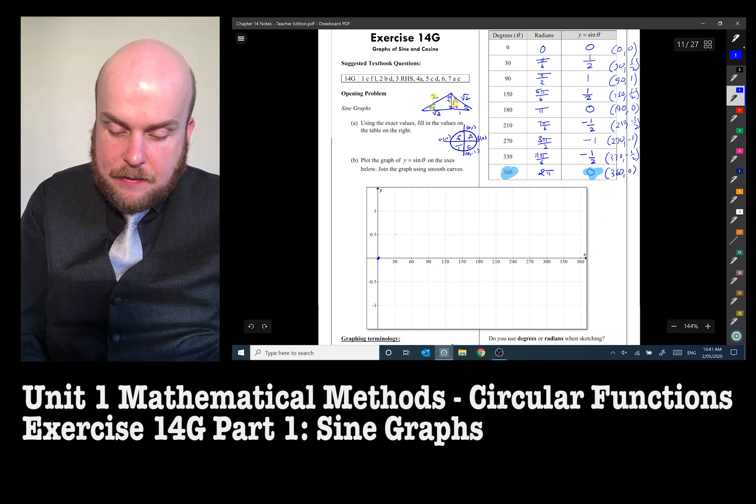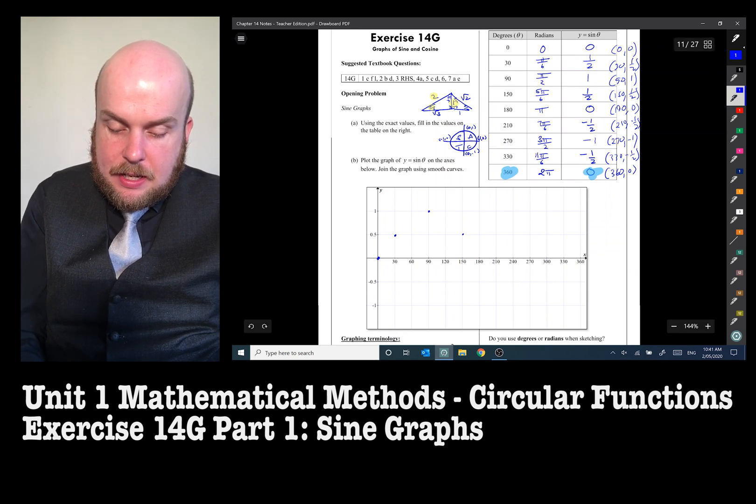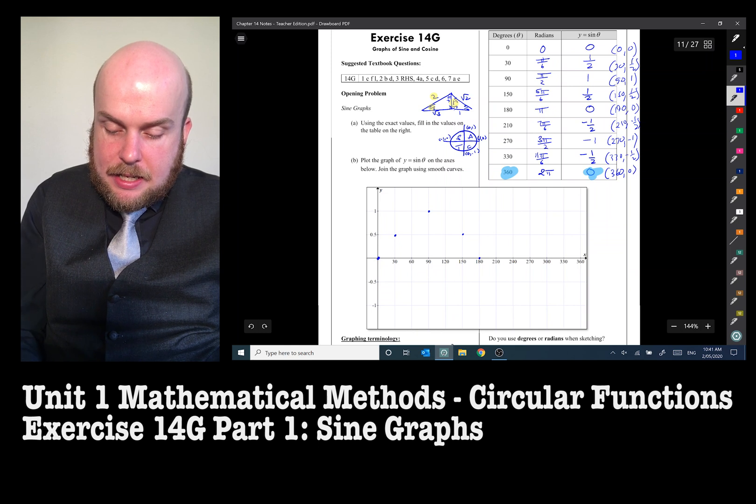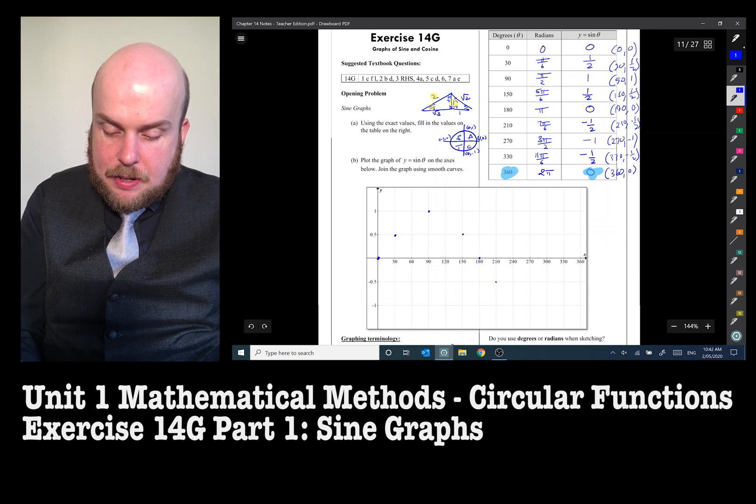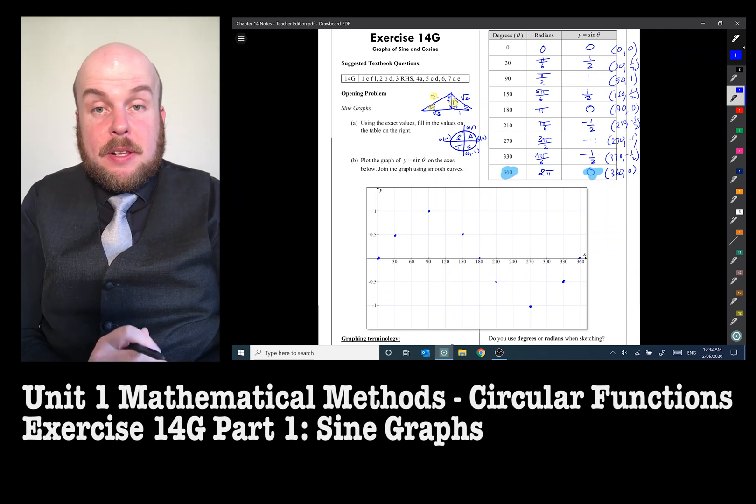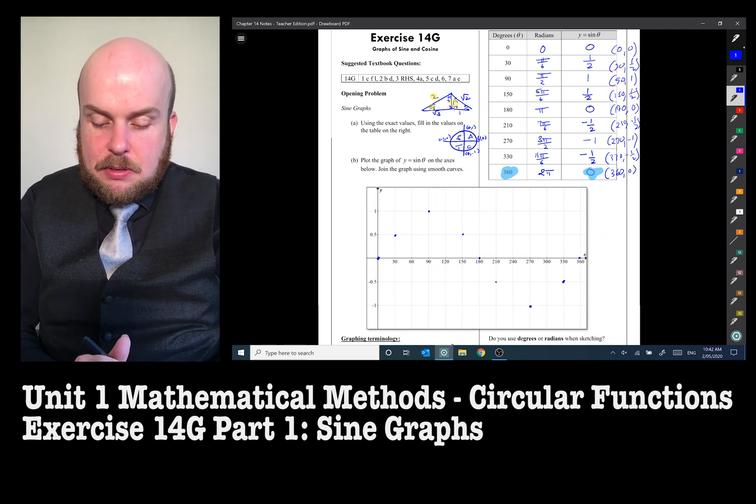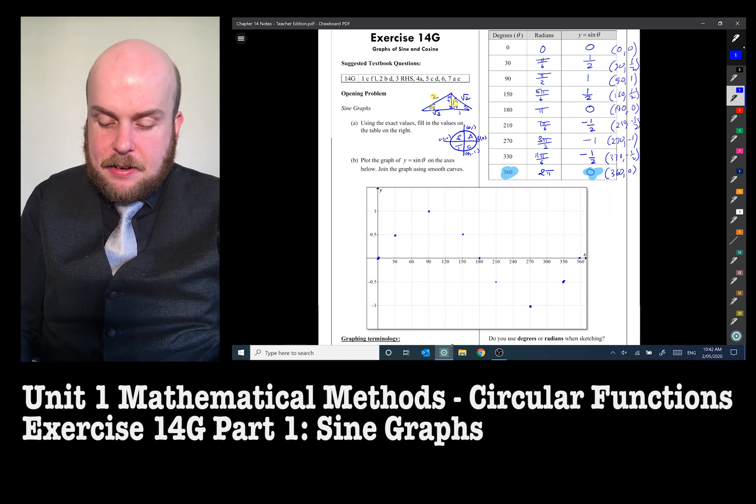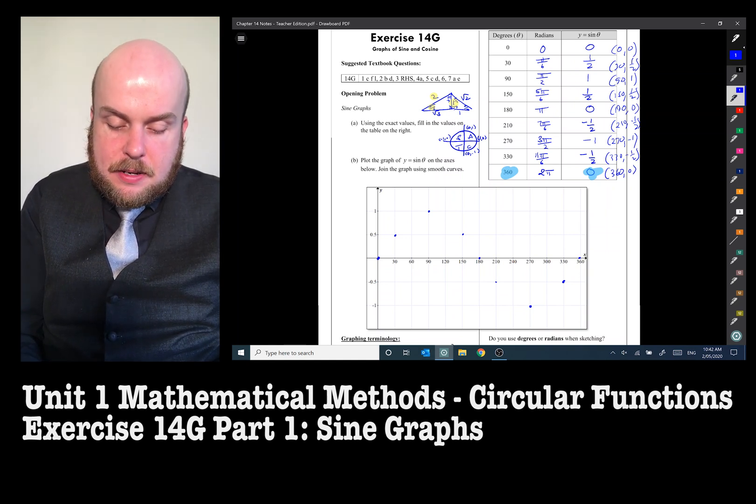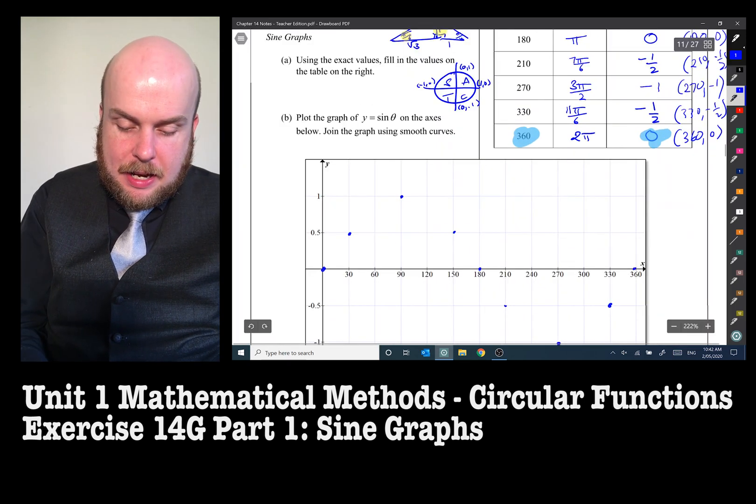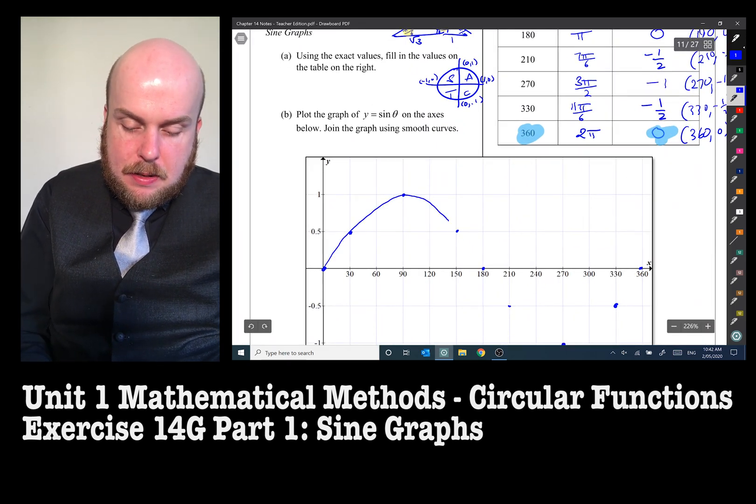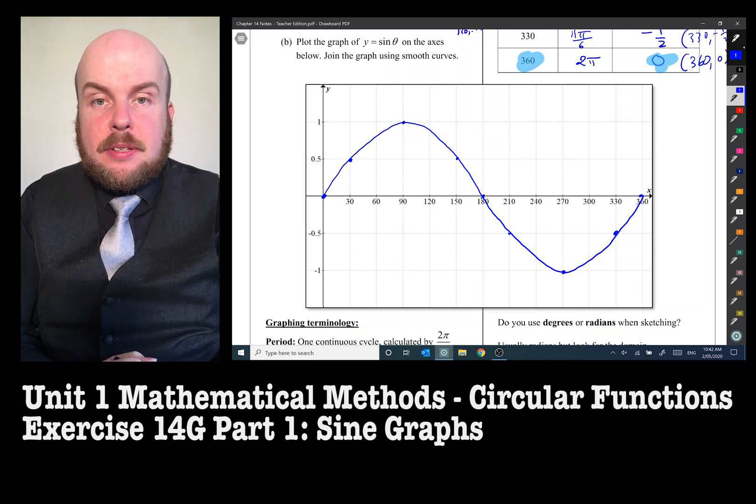so just in case you didn't see what I was doing there, the coordinates for this graph is going to be whatever the angle is in degrees or radians and what the sine value is. So 360 and 0 is our last one. So we're going to do this accordingly. So 30, half, going to ignore 60, 91, 150 is 0.5, 180, 210 is 0.5, 270 is 1, 330, negative 0.5, and there's 360. So hopefully you'll see that it looks like it's going to make a really nice little pattern of curve here.